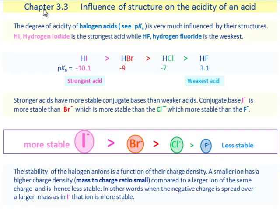Influence of structure on the acidity of an acid. The degree of acidity of halogen acids is very much influenced by their structures. Hydrogen iodide is the strongest acid while hydrogen fluoride is the weakest among halogen acids.